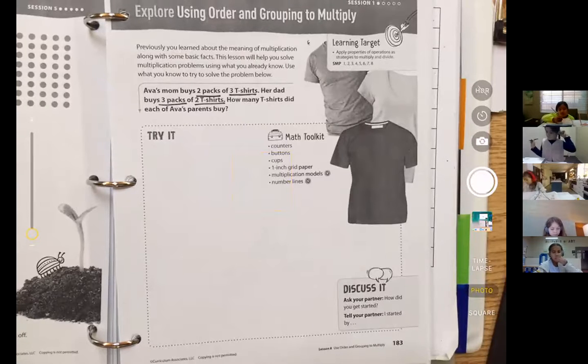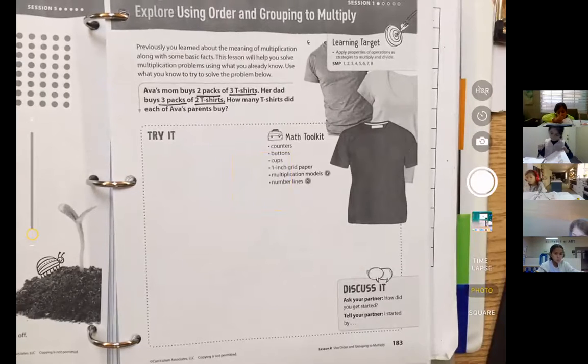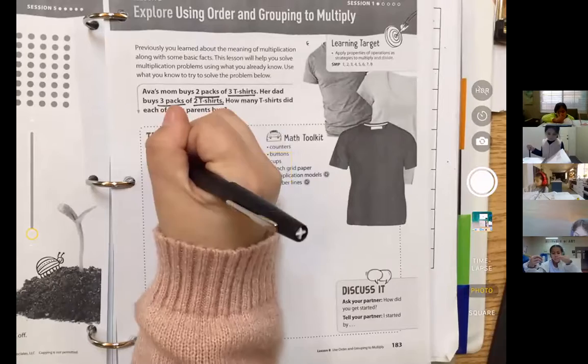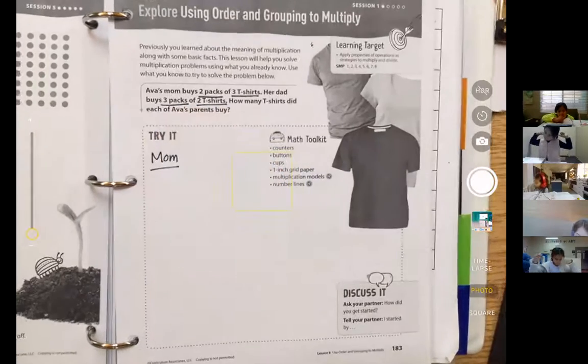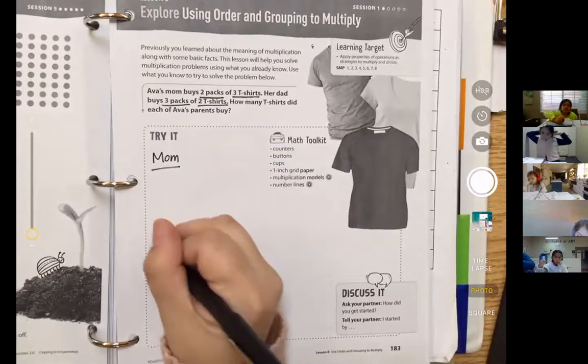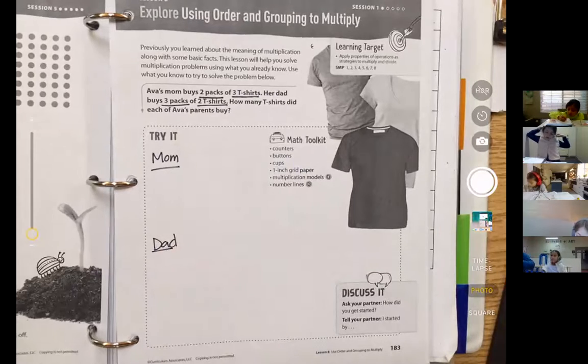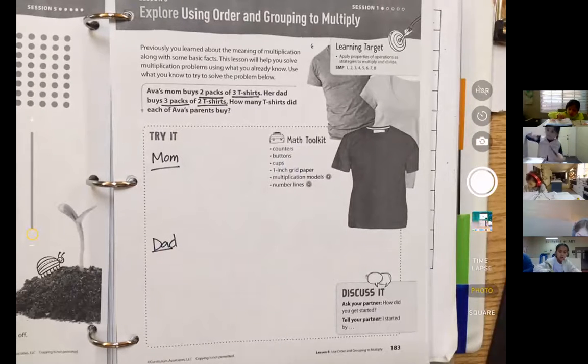Okay, so I want you guys thinking about each of those separate things. You're going to actually have two separate models. So you're going to have one for her mom and then one for her dad. So I want you guys to see if you can draw a model to show you that.